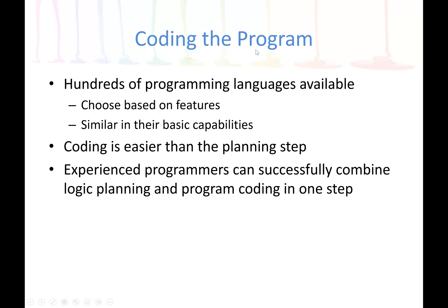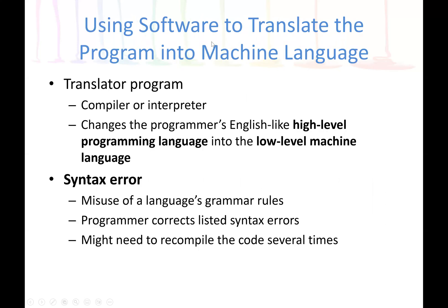The next step is coding the program — the implementation phase. Here we use any programming language to write the code. Coding is easier than the planning step because coming up with the algorithm design is very difficult, while coding is just using the syntax of a specific programming language. Then using software, we translate the program into machine language, because the CPU only understands machine language with 0s and 1s.